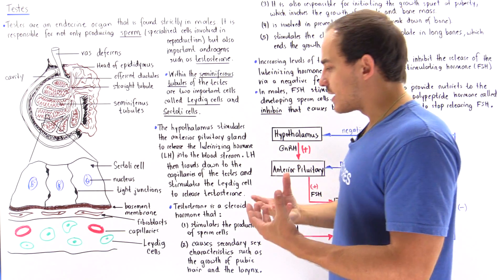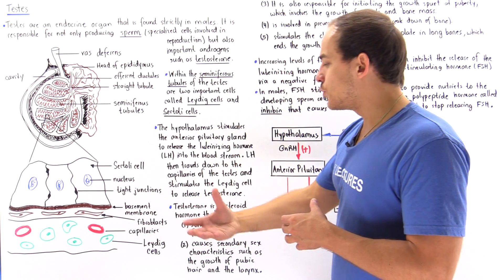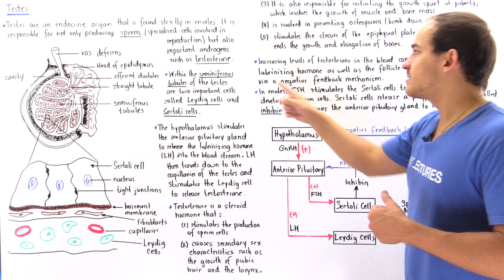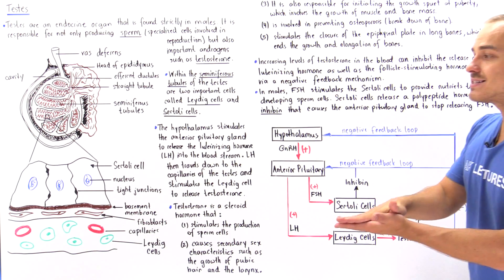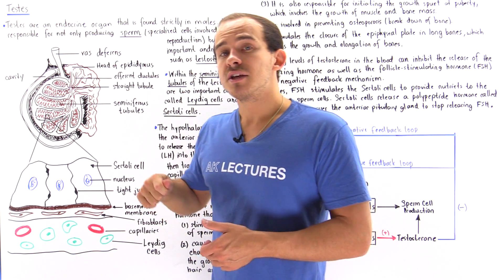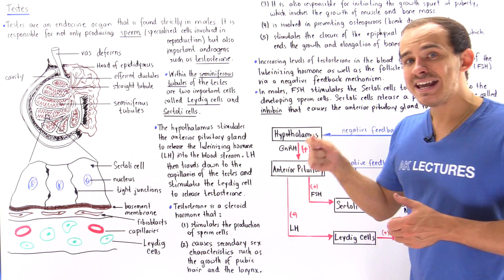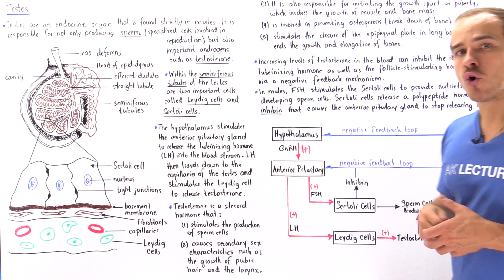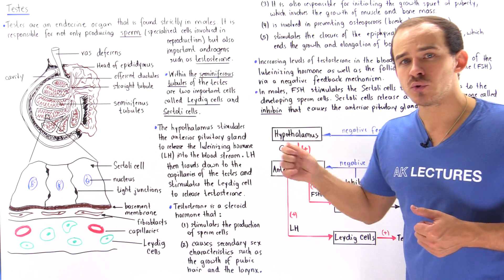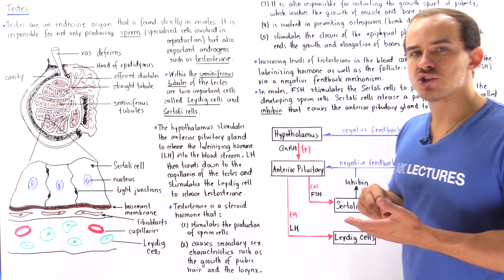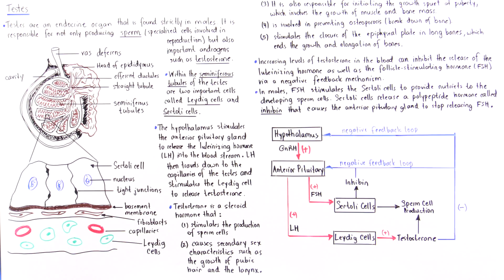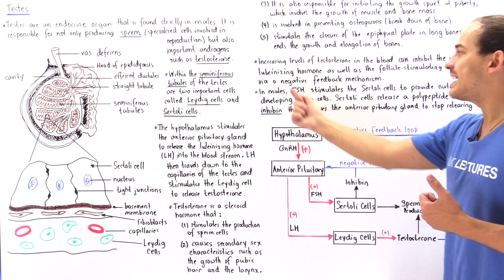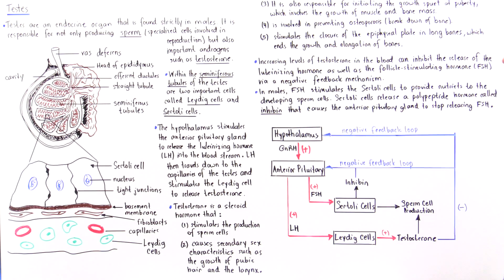As time progresses and our Leydig cells continually release testosterone into the blood, the level of testosterone increases. As blood testosterone level rises, testosterone can inhibit the hypothalamus from releasing gonadotropin-releasing hormone, and it can also inhibit the anterior pituitary gland from releasing luteinizing hormone and follicle-stimulating hormone. This type of pathway is known as negative feedback inhibition, or a negative feedback mechanism.